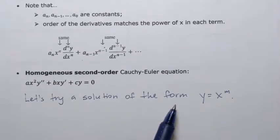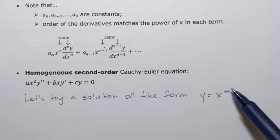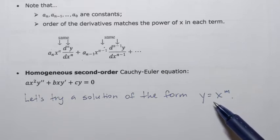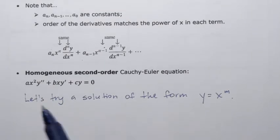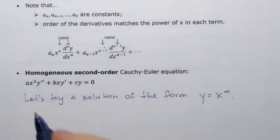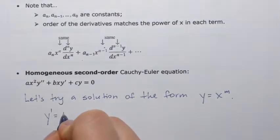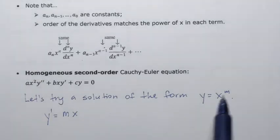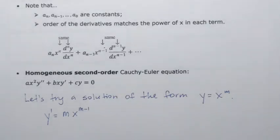This is how we think about solving the homogeneous second-order Cauchy-Euler equation. We're going to try a solution of the form y equals x to the power m, and the goal will be to determine this power. If we assume this is a solution, it should satisfy the equation, so we plug it in. That means we need the first and second derivatives. Using the power rule, y prime equals m times x to the power m minus 1.